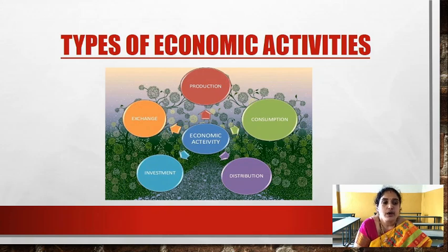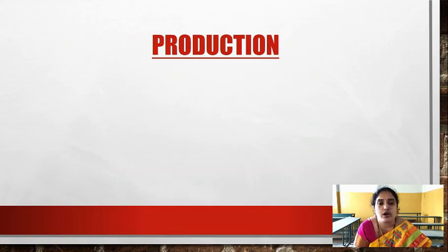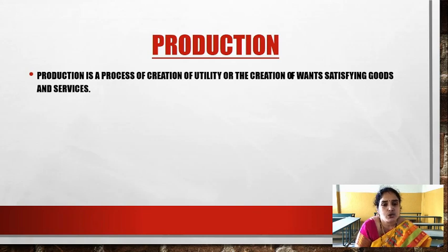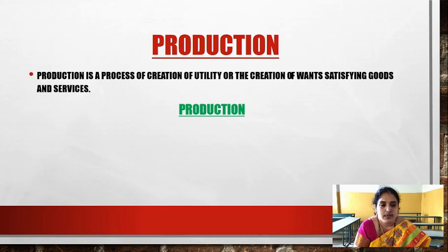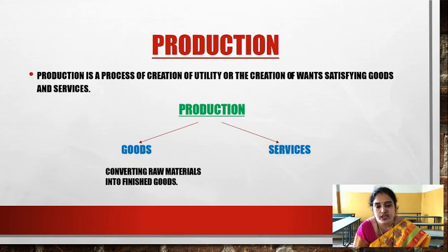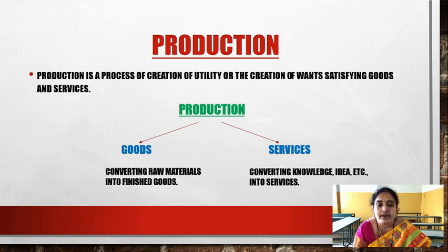Now coming to production. Production is the process of creation of utility, or the creation of want-satisfying goods and services. Any commodity which satisfies human wants is produced in order to satisfy unlimited wants with the help of resources. Whatever we produce with the help of scarce resources is called production. Production is classified into two: producing goods and producing services. Goods involve converting raw materials into finished goods ready for consumption. Services involve converting knowledge and ideas into services for people.